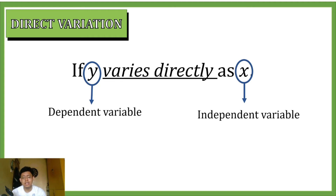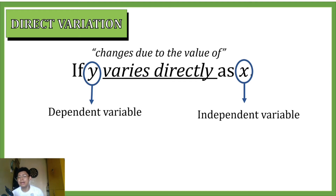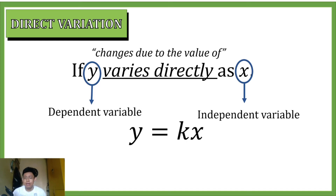And our variable x is our independent variable. The phrase 'varies directly' can be translated as 'changes due to the value of' — so the value of our variable y changes due to the value of our variable x, which is our independent variable.